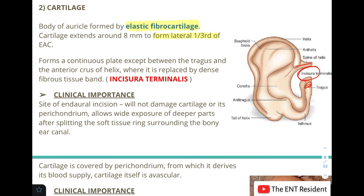The incisura terminalis is important clinically: since there is no cartilage here, it has become the site for the endaural incision when approaching ear surgeries via the endaural approach. The incision in this region will not damage cartilage or its perichondrium, allowing wide exposure of the deeper parts of the canal after splitting the soft tissue ring surrounding it.